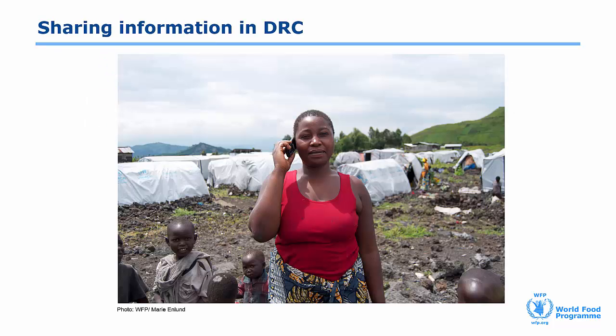The origins of the MVAM two-way communication system go back to an IDP camp in the Democratic Republic of Congo. Shortly after starting remote data collection, we realized that people in the camp were using the airtime credit incentive they had received to call up the local WFP office and ask about upcoming food distributions. They would also call relatives to get news from home and receive mobile money transfers. By implementing phone surveys, we had also, quite unintentionally, been empowering people in this isolated and vulnerable community.